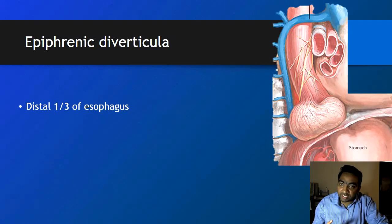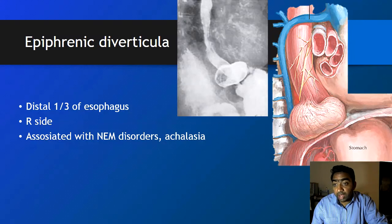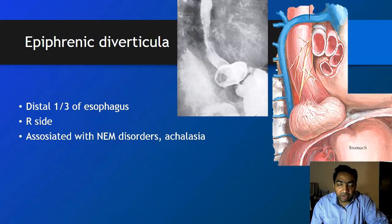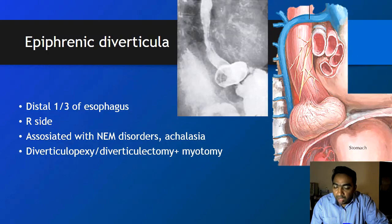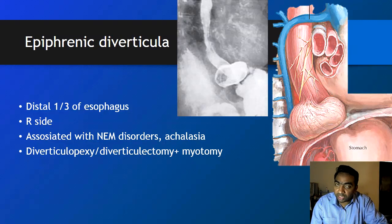Epiphrenic diverticula are situated in the distal one-third of the esophagus, as seen on barium swallow imaging. They are more commonly seen on the right side and are associated with achalasia cardia and non-specific esophageal motility disorders. Although achalasia cardia is a common cause due to increased lower esophageal sphincter spasm, non-specific esophageal motility disorder is the most common cause for epiphrenic diverticula. Treatment is diverticulopexy or diverticulectomy, and myotomy is required if manometric studies confirm increased lower esophageal sphincter tone.